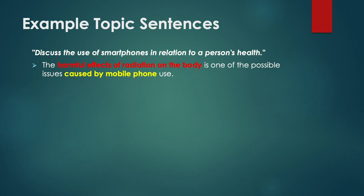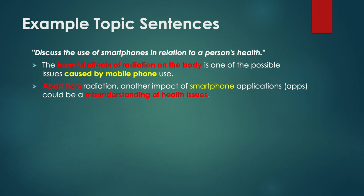The text in red tells us it will be about the physical problems caused to the body, and it links back to the question with the words in yellow: 'caused by mobile phones.' In the second paragraph we have 'apart from radiation, another impact,' which means it could be a second problem paragraph, with smartphone applications linking back to the question. This paragraph is about social factors rather than physical impacts.